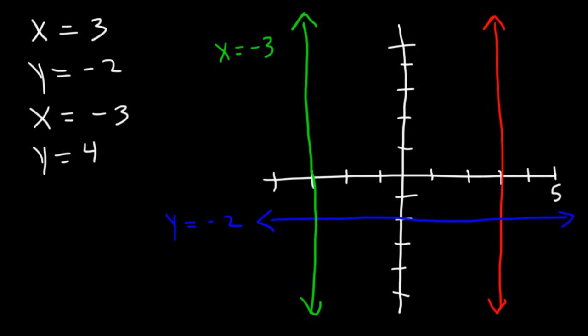And the last one, y = 4, that's going to be a horizontal line at 4.